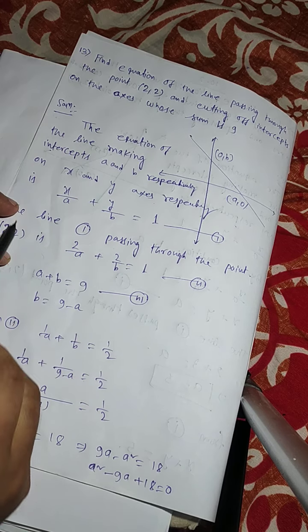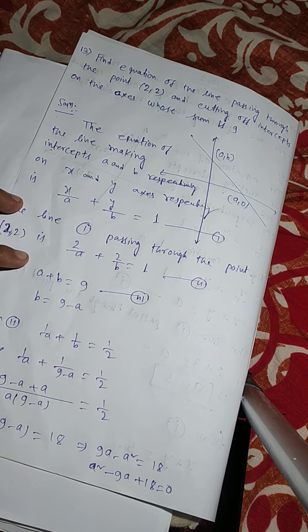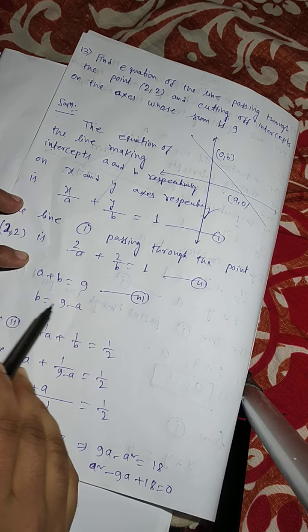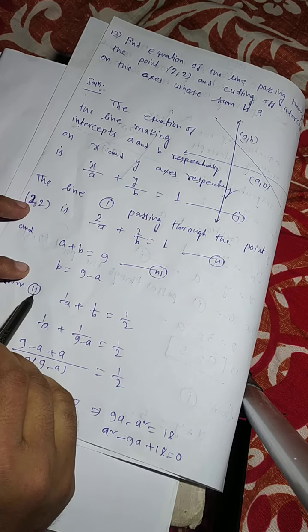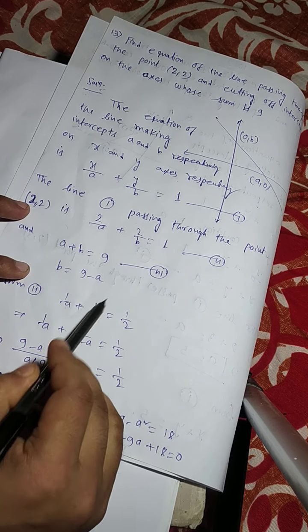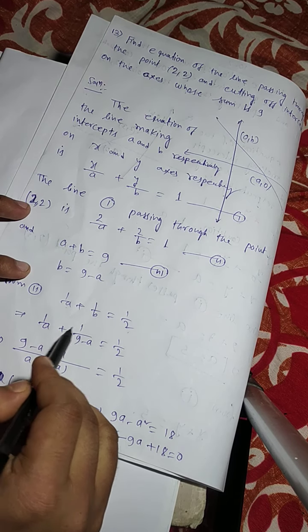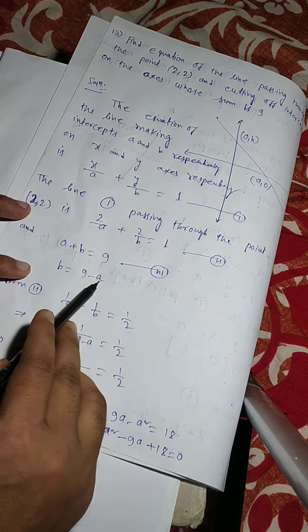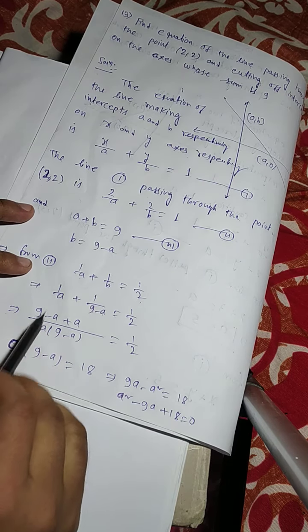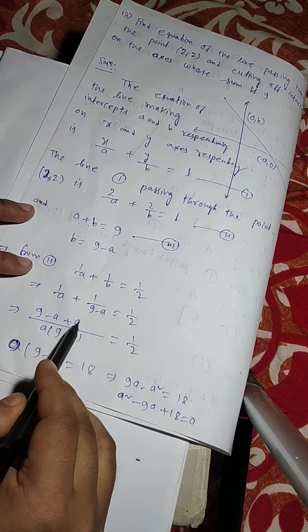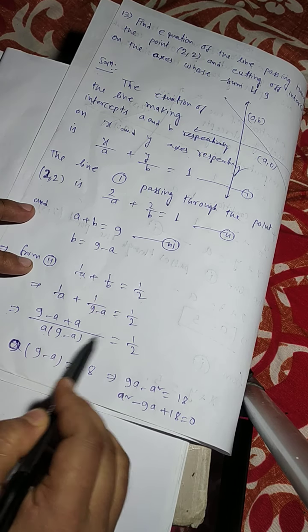By the problem, A plus B equals 9, which is equation number 3. So B equals 9 minus A. From equation 2, 1 by A plus 1 by B equals 1 by 2. Substituting B with 9 minus A: 1 by A plus 1 by (9 minus A) equals 1 by 2. By LCM, 9 minus A plus A by A into (9 minus A) equals 1 by 2.